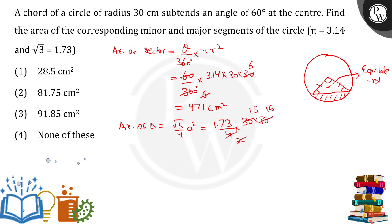225 has to be multiplied by 1.73. This comes out to be 389.25 cm².